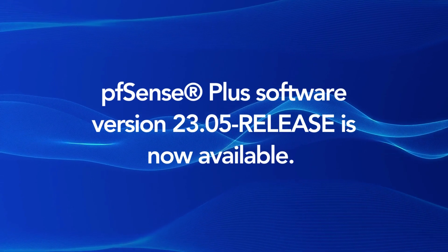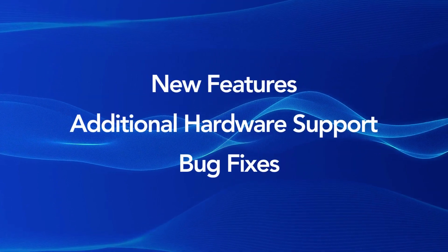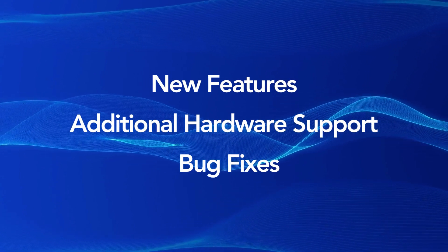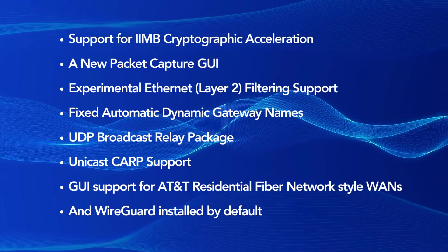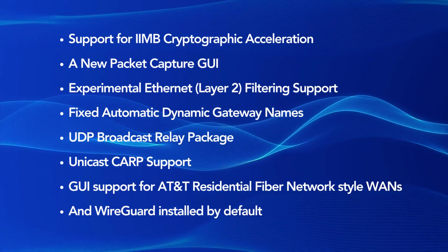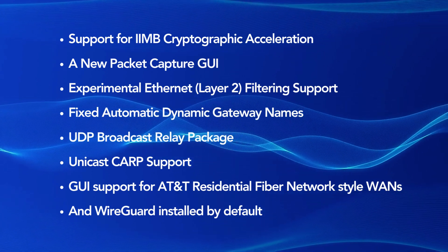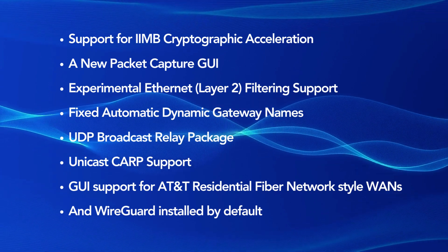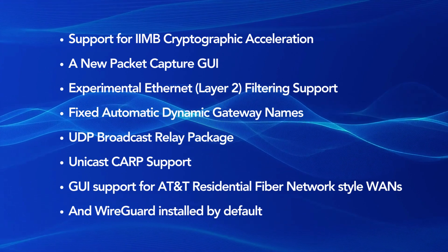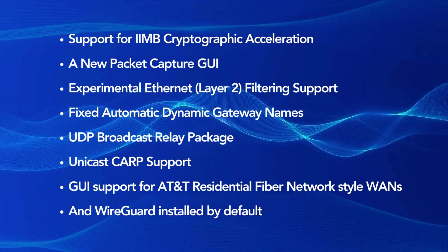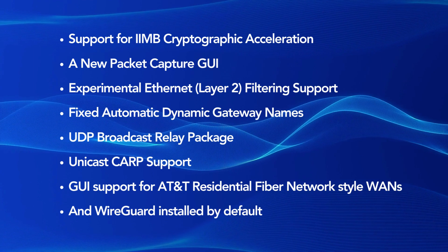We're happy to announce that pfSense Plus software version 2305 is now available. This is a regularly scheduled release of pfSense Plus software including new features, additional hardware support, and bug fixes. The release contains significant enhancements such as support for IIMB cryptographic acceleration, a new packet capture GUI, experimental Ethernet filtering support, fixed automatic dynamic gateway names, a UDP broadcast relay package, unicast CARP support, GUI support for AT&T residential fiber network style WANs, and WireGuard installed by default.